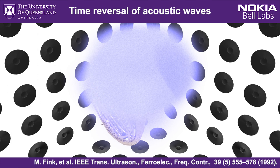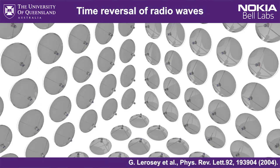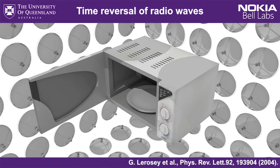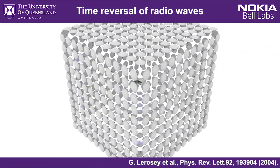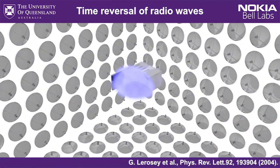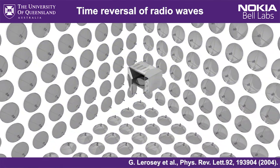For radio and microwaves the same idea applies, except instead of speakers and microphones we've got antennas. The source wave propagates out, it's recorded, flipped in time, and then replayed from all positions to recreate the original source. Such so-called time-reversal mirrors exist for both acoustic waves and also for microwaves.